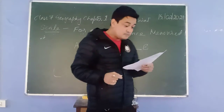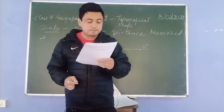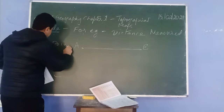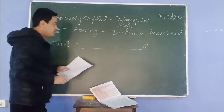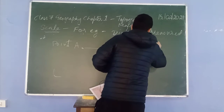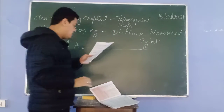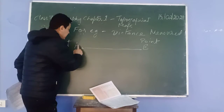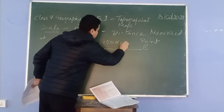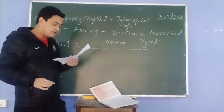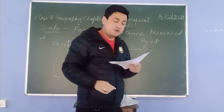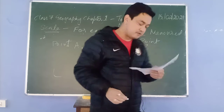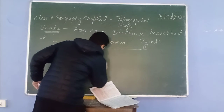Let us consider two places, point A and point B, which are 100 kilometers apart. From A to B it is 100 kilometers apart. If we say that one centimeter on the map stands for 50 kilometers on the ground, I will make a simple scale here.